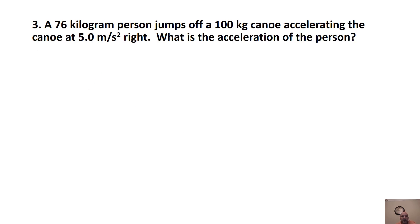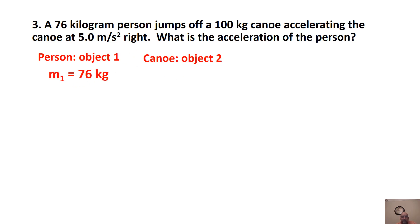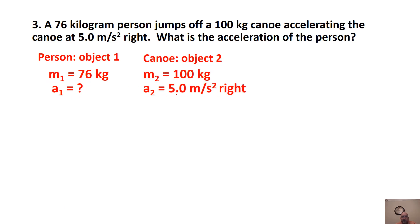Problem 3: A 76-kilogram person jumps off a 100-kilogram canoe, accelerating the canoe at 5 meters per second squared to the right. What's the acceleration of the person? We're using M1·A1 = −M2·A2. M1 (person) = 76 kg, A1 = unknown; M2 (canoe) = 100 kg, A2 = +5.0 m/s² to the right. Using plus to represent right.